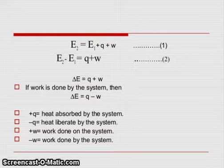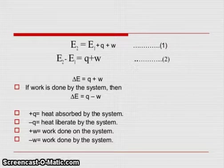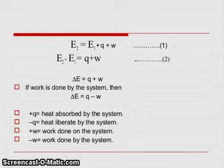If work is done by the system, then ΔE equals q minus w. Plus q means heat absorbed by the system. Minus q means heat liberated by the system. Plus w means work done on the system, and minus w means work done by the system.